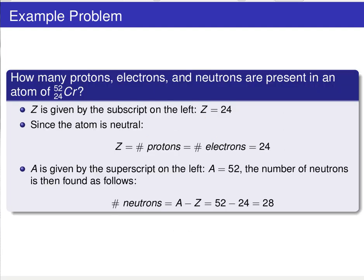So another example problem here. Let's look at the example of chromium, and we're looking at the chromium-52 isotope, and we want to determine the number of protons, electrons, and neutrons. So Z is given for us. We've got the subscript on the left, which is 24. Now, we want to figure out the number of neutrons based on this number of protons. Because the atom is neutral, there must be an equal number of protons and electrons. Therefore, the number of electrons is also going to be 24.